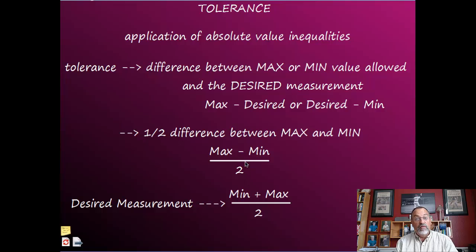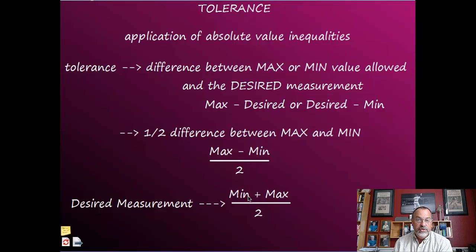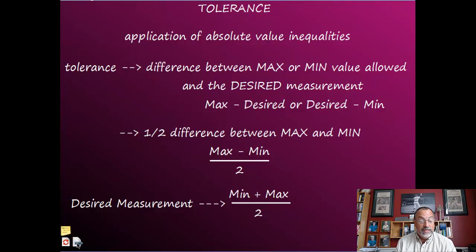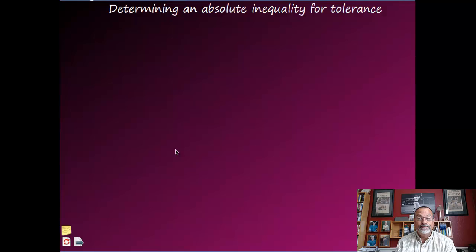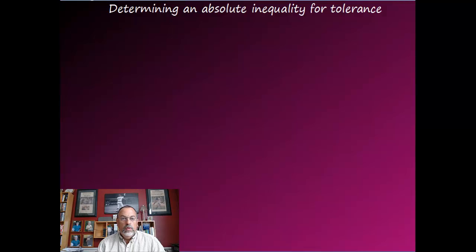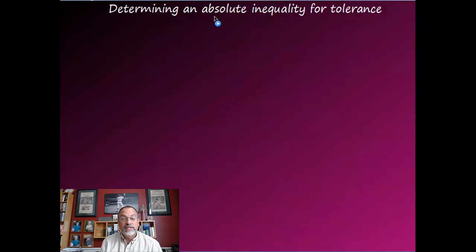Tolerance is how far away from the desired measurement you're willing to accept. To figure out the desired measurement, take the max plus the min and divide by two. Now let's look at how you determine an absolute value inequality for tolerance, since tolerance is an absolute value application.